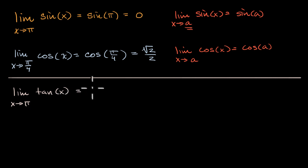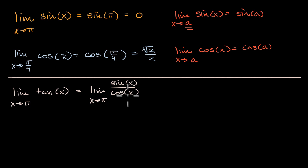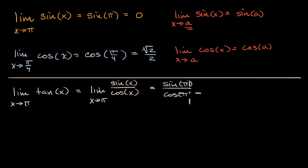This is the same thing as the limit as x approaches pi of sine of x over cosine of x. Both of these are defined at pi, so we can just substitute pi in — we just need to ensure we don't get a zero in the denominator. We get sine of pi over cosine of pi, which is zero over negative one, and that is just equal to zero.